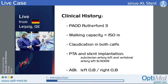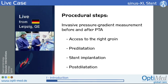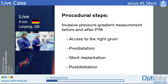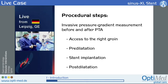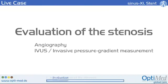We performed the stenting of the left subclavian artery last year and the ABI at both legs is 0.8. Our procedural steps: access at the right groin with a 12 French sheath, we will perform a pre-dilatation, then implantation of a nitinol stent, and post-dilatation.